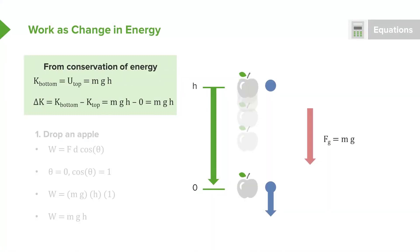Since this is the change in kinetic energy, we can also find it using work. A force is being applied downwards, and the object is also moving downwards, so we use the work equation: force times distance times the cosine of the angle between them. This angle is zero because the force and motion are both directly downwards — they point in exactly the same direction. The cosine of zero is one, so the work equals mg times h times one, giving us work equals mgh.